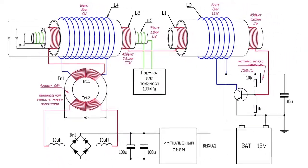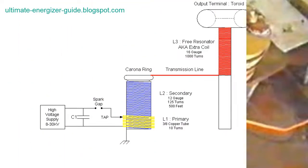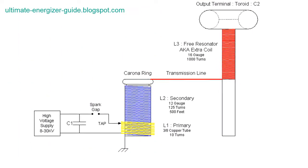It works by creating a high voltage, high frequency current that can be transmitted through the air or ground. This current passes through a capacitor that stores energy until it is discharged in a powerful spark. The spark creates an electromagnetic field that can be harnessed to generate electricity.